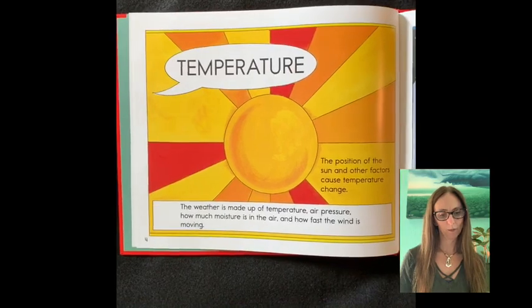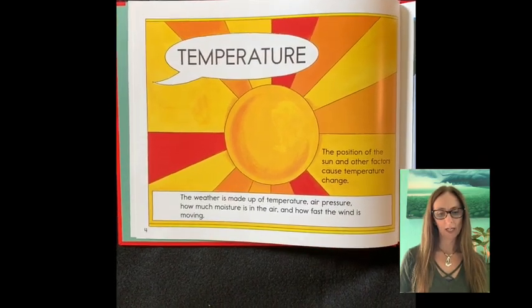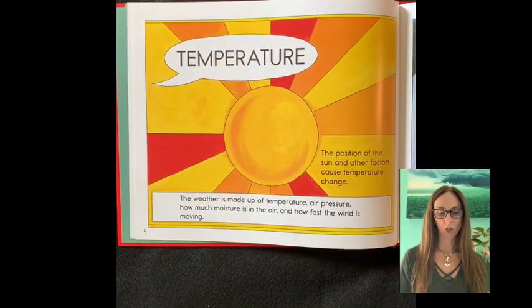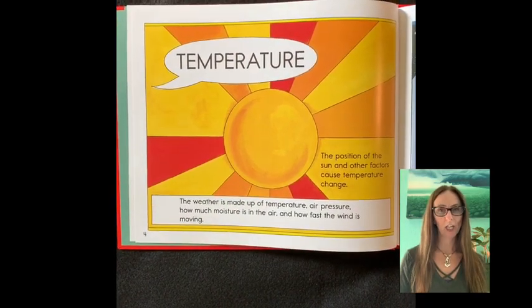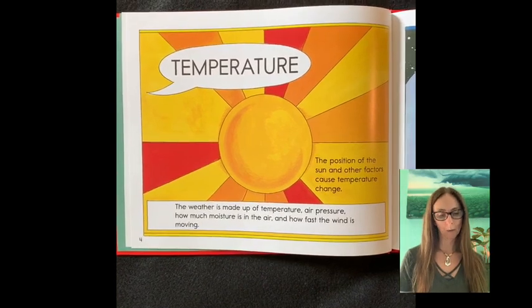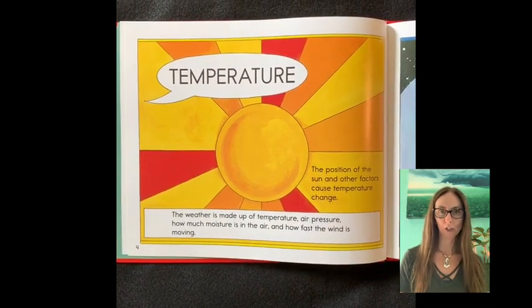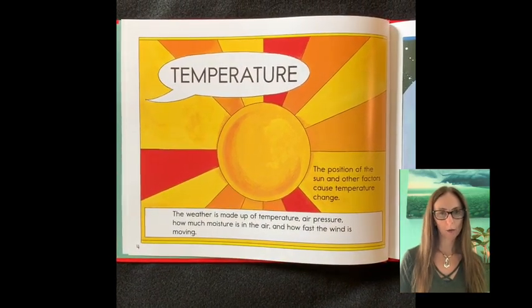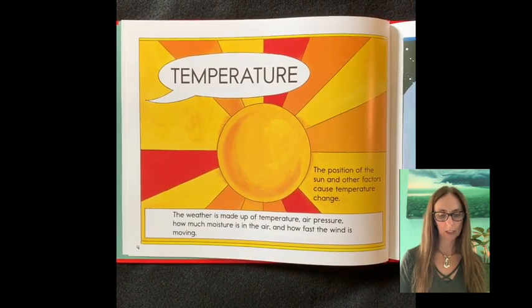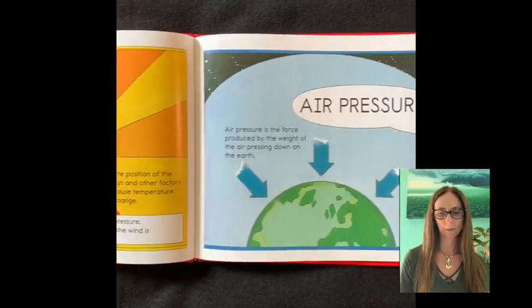Temperature. The position of the sun and other factors cause temperature change. The weather is made up of temperature, air pressure, and how much moisture is in the air and how fast the wind is moving.